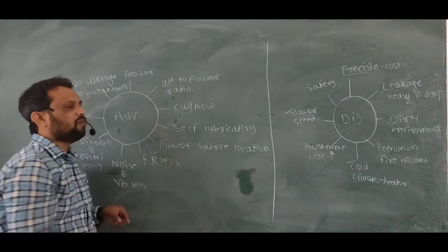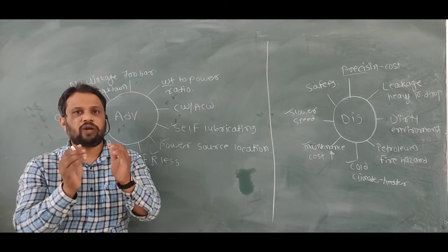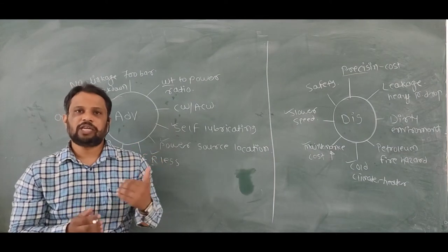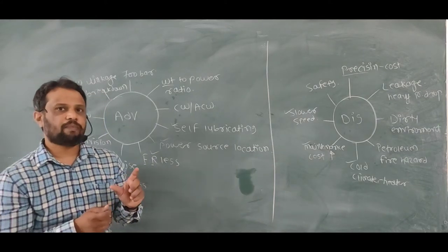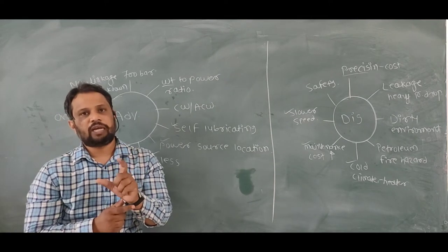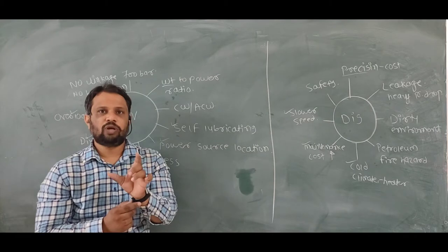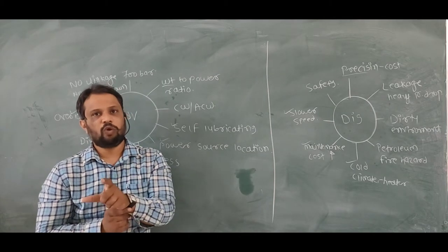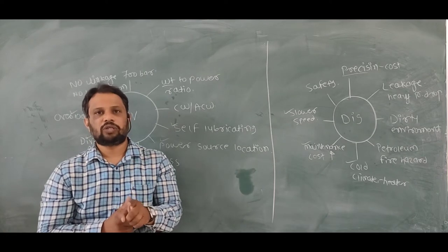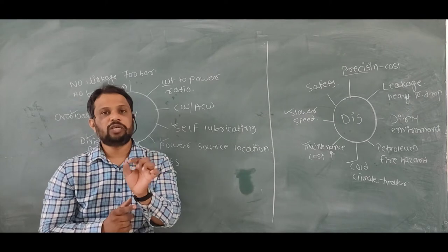After that, weight to power ratio. Weight to power ratio means the weight of hydraulic system is less but power generation capacity is more. For that I will give one example. I have designed one electric motor. The weight of electric motor is 8.5 kg per kilowatt. But for the same application I have designed hydraulic motor. The weight of hydraulic motor is only 0.85 kg per kilowatt.